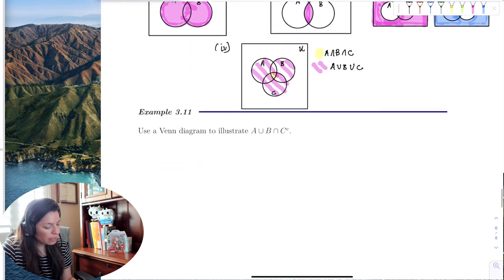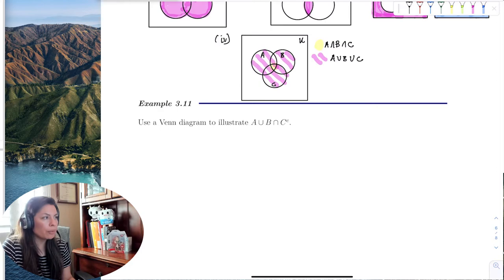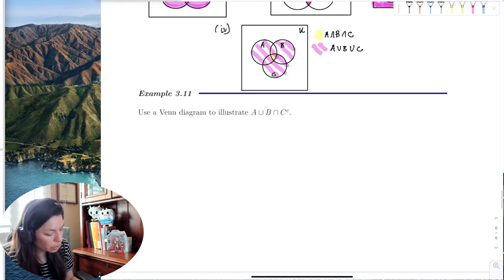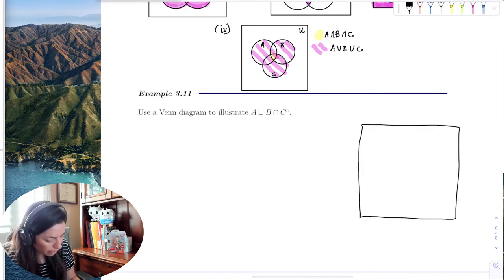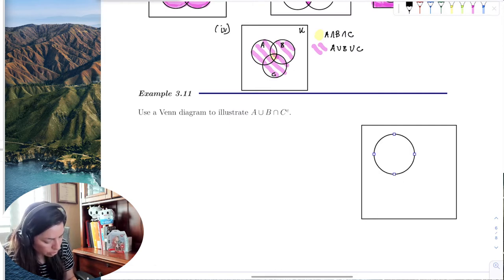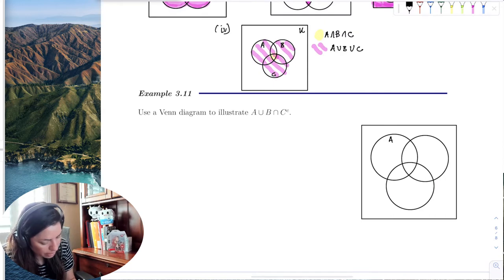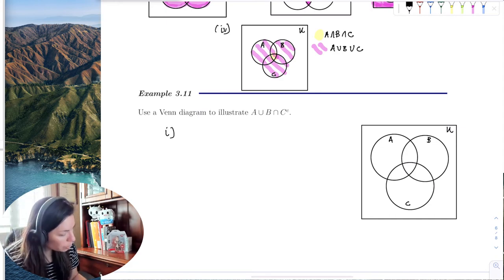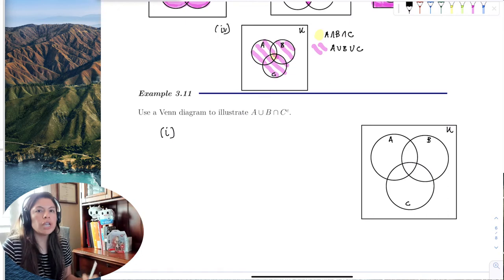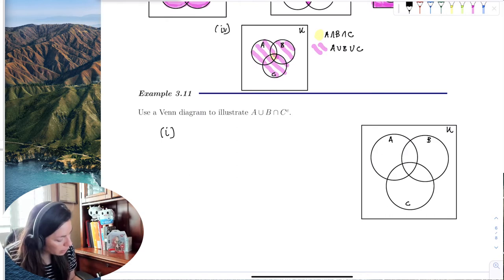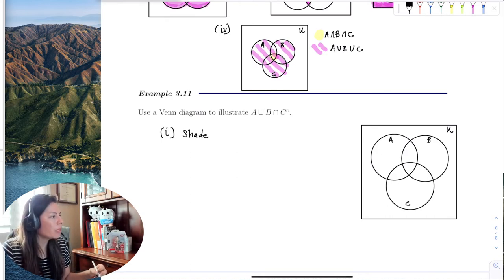So when we draw the Venn diagram, let's say for A union B intersection C complement, I think the first thing we should probably do is draw the Venn diagram. And we'll draw it really big with three circles. A, B, C, and with the universal set right here. Great. So I think the first part we want to do is we're going to shade one at a time. I think the first thing we want to shade is working left to right.